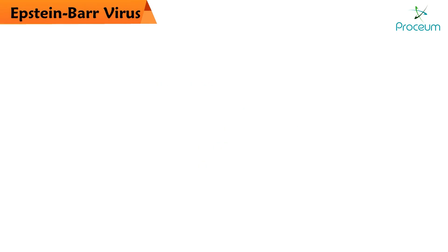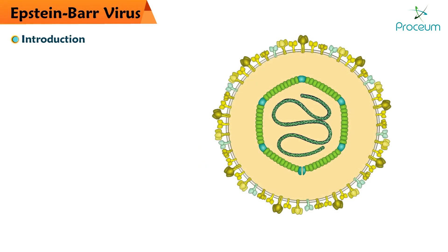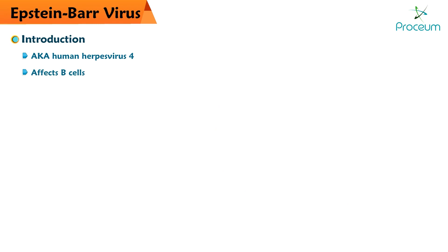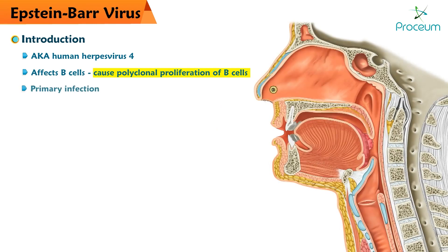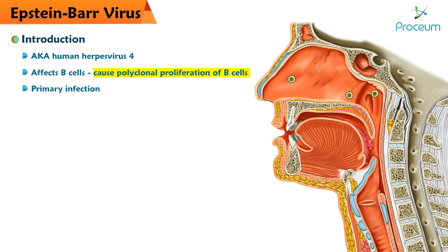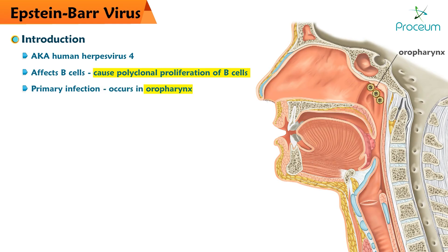Epstein-Barr virus, also known as human herpesvirus 4, is a member of the herpesvirus family. It affects B cells and causes a polyclonal proliferation of B cells. Primary infection of Epstein-Barr virus occurs in the oropharynx.